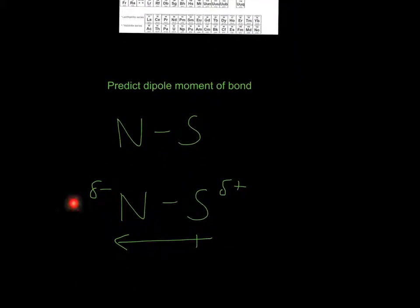Giving nitrogen a partially negative charge, that's all this means, and a partially positive charge. I hope that helped, and thanks for watching.